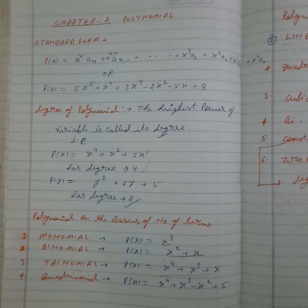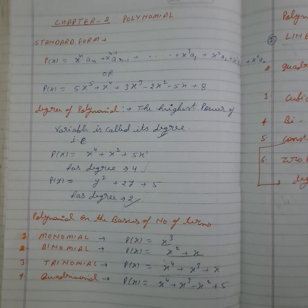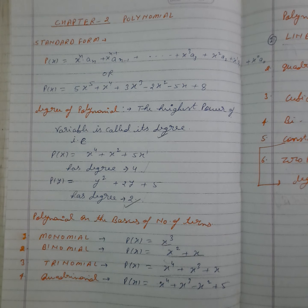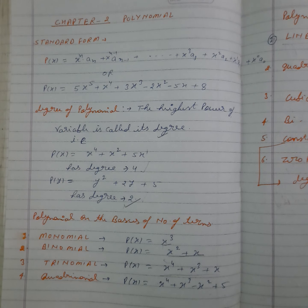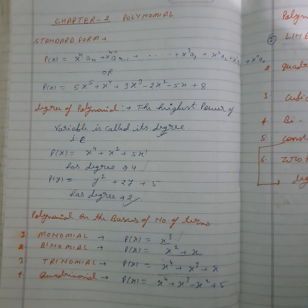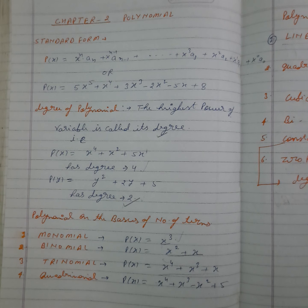Now, type of polynomial — this we have already discussed in class 9. We can define by two methods: number of terms, and according to the degree. So first, monomial — a polynomial having only one term is called monomial. Whatever degree is there, we have to count only the terms. So in monomial, only one term is there.